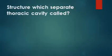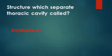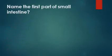The structure which separates the thoracic cavity is called the diaphragm. The first part of the small intestine is the duodenum.